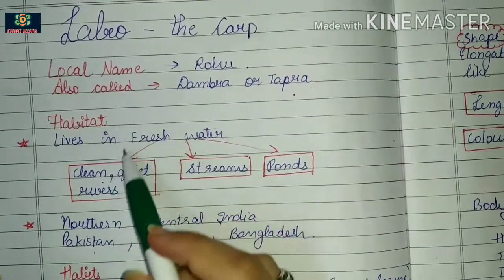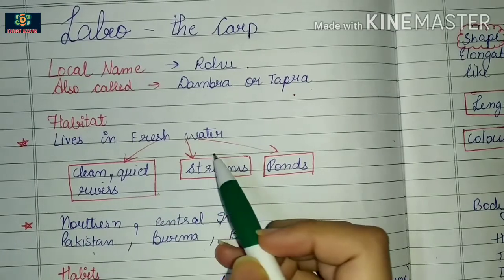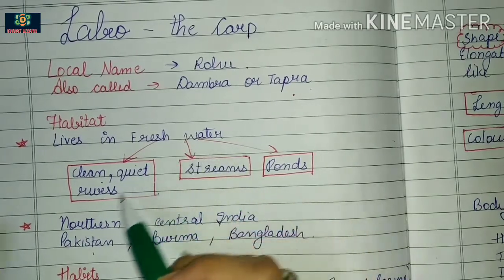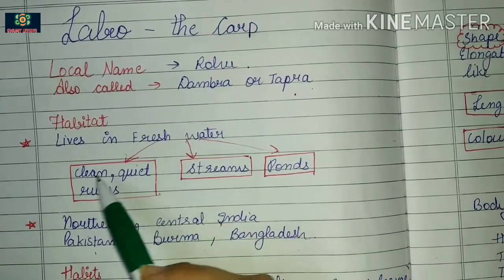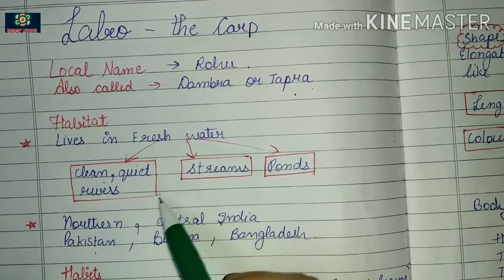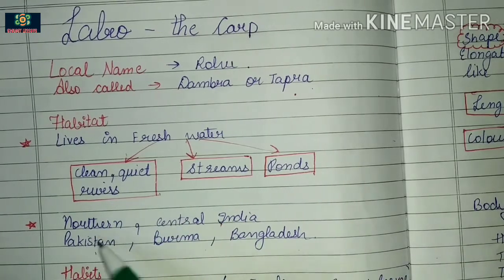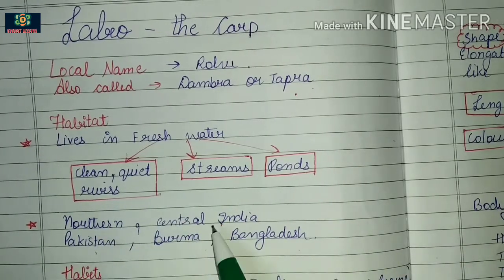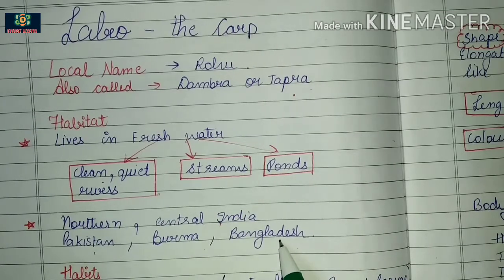Talking about its habitat, Labeo rohita lives in fresh water — clean, quiet rivers, streams, and ponds. It is found in northern and central India, Pakistan, Burma, and Bangladesh.